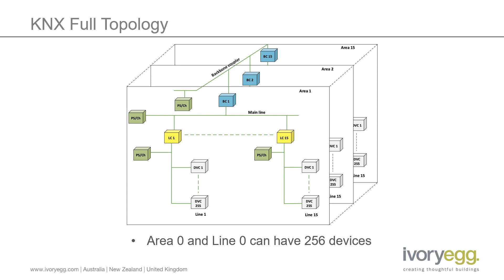The total of 256 devices on line zero and area zero does include any couplers that are linking to lower level lines or areas, and the same rule applies for mixing older and new devices. One TP164 device takes the place of four TP1256 devices.